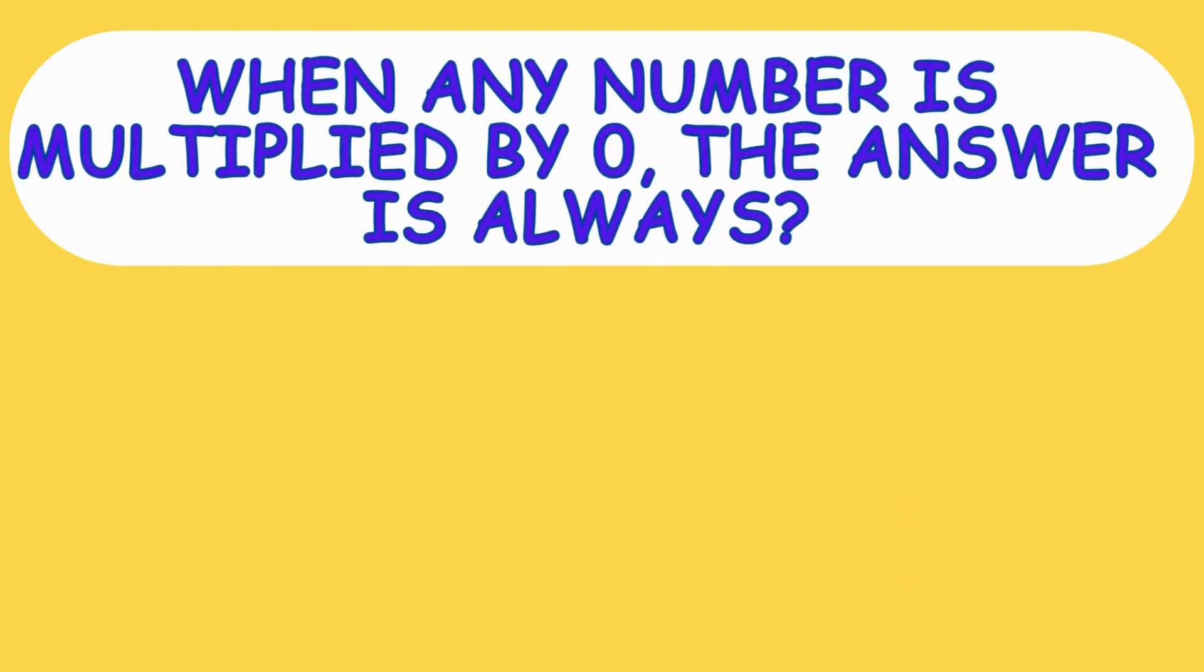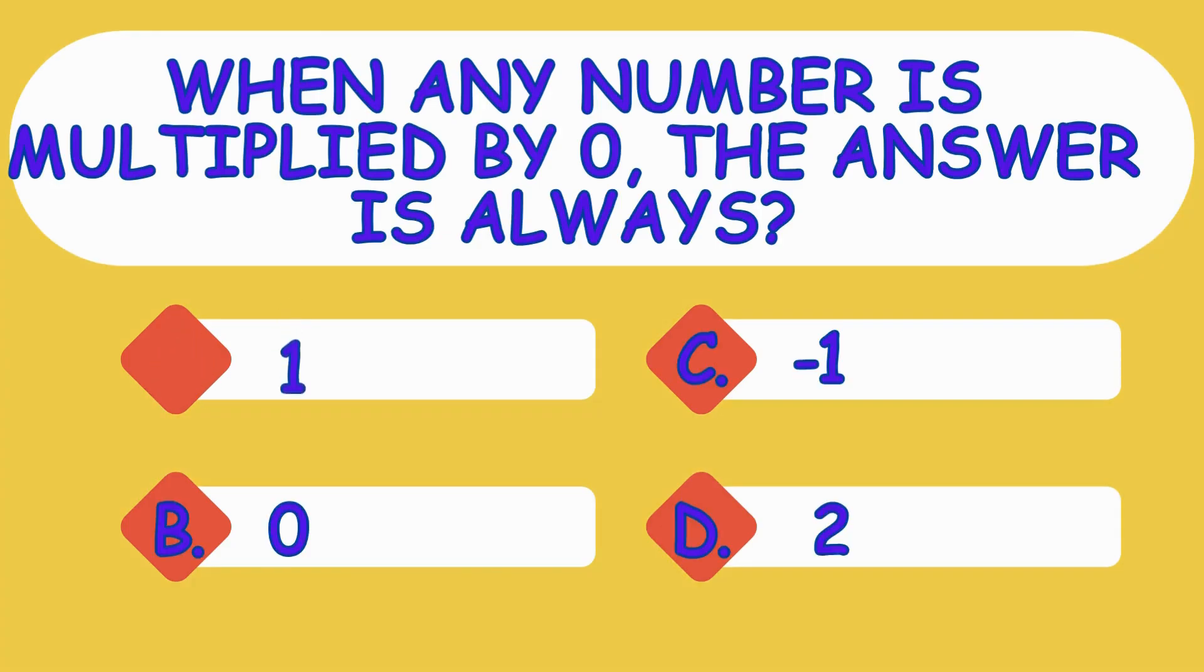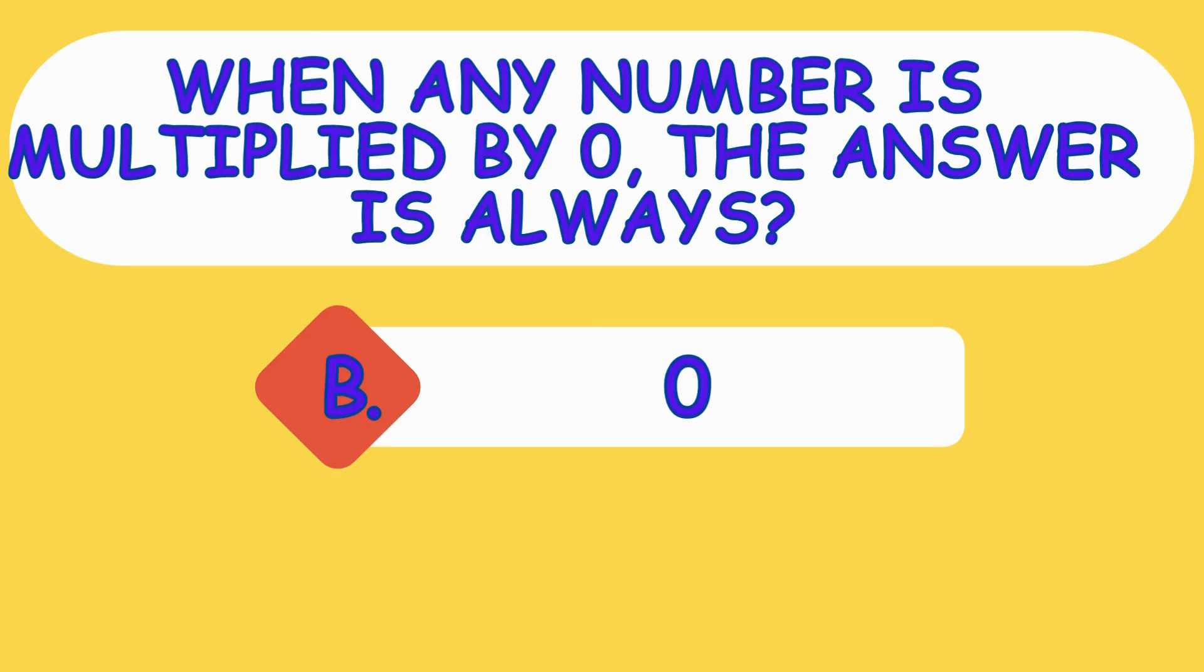When any number is multiplied by zero, the answer is always? A. 1, B. 0, C. minus 1, D. 2. The answer is option B, zero.